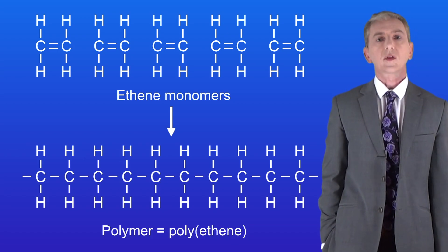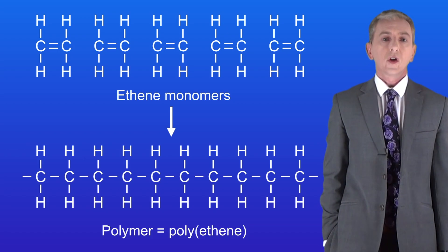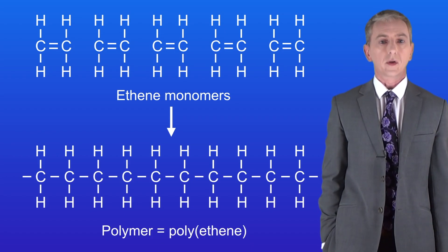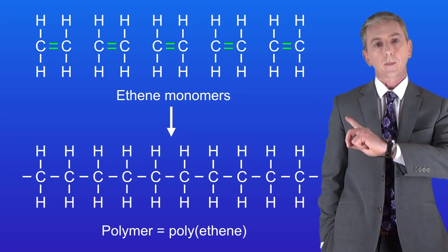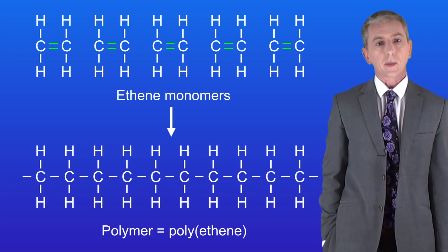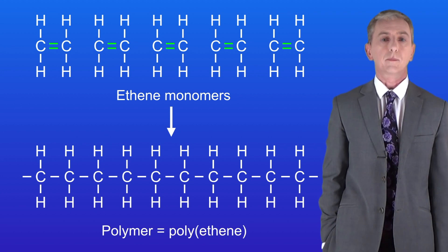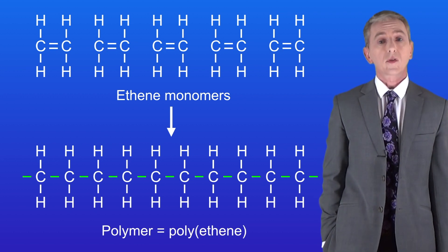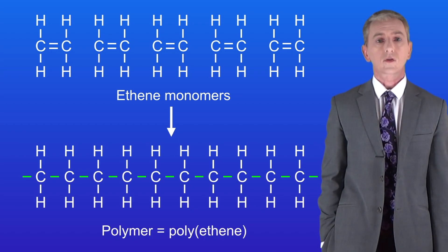Now there are several points about this that you need to learn. Firstly, the monomer has a double carbon-to-carbon covalent bond. We can see these here. However, the polymer contains single carbon-to-carbon covalent bonds and here they are. Remember that because these bonds are covalent they're extremely strong.